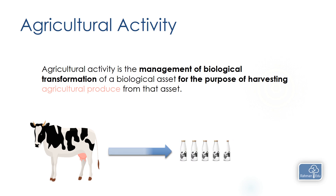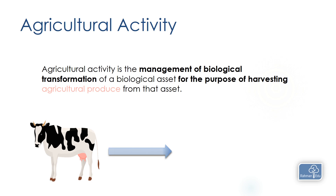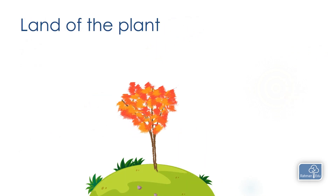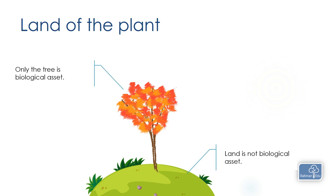You may ask what is a biological asset. Biological assets are living plants and animals. This includes all kinds of animals like sheep, donkeys, cows, and goats, as well as trees, plants, fish, chickens, birds, and other living things. Note that trees are sometimes physically attached to land — the tree is a biological asset but the land is not.